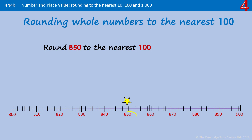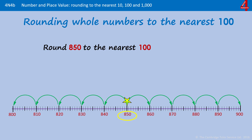850 is the same distance away from 800 and 900. This works just like the 5 when you're rounding to the nearest multiple of 10. The rule is that you round up, so 850 rounds up to 900.